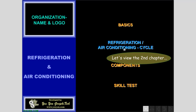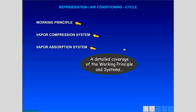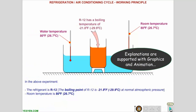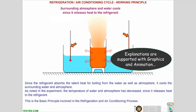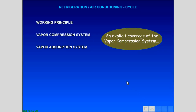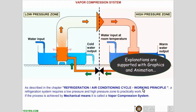Let's view the second chapter. A detailed coverage of the working principle and systems. Explanations are supported with graphics and animation. An explicit coverage of the vapor compression system. Explanations are supported with graphics and animation.